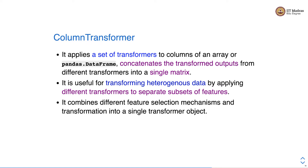ColumnTransformer applies a set of transformers to columns of an array or pandas DataFrame, and concatenates the transformed output from different transformers into a single matrix. It is useful for transforming heterogeneous data by applying different transformers to separate subsets of features.